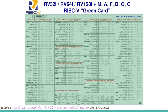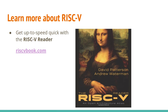To give you a sense of the landscape, the base ISA and standard extensions all fit on one card. Comparing that to x86 or ARMv8, it's much smaller. If you want to get more in-depth on the instruction set, I recommend the RISC-V Reader. It's a short book of about 100 pages that gets you up to speed quickly, and it's available in several different languages.